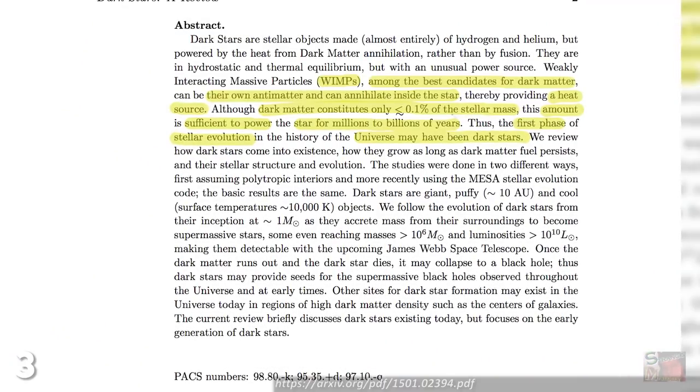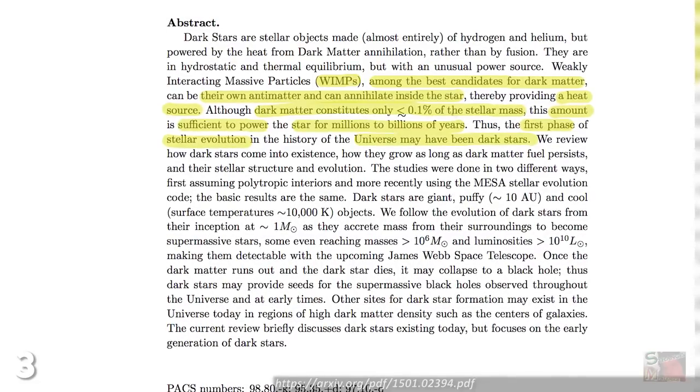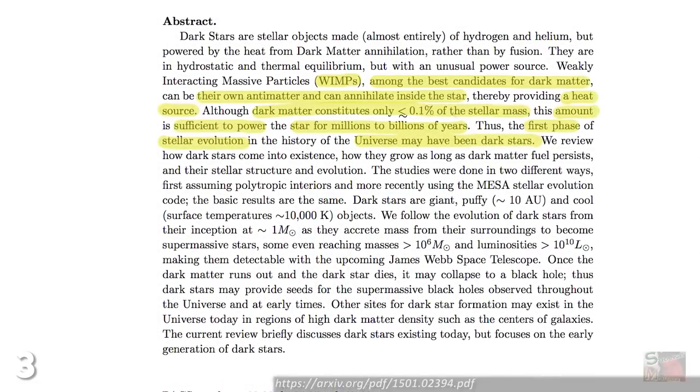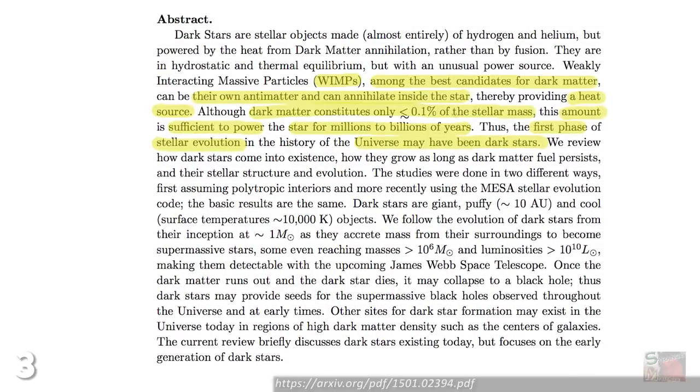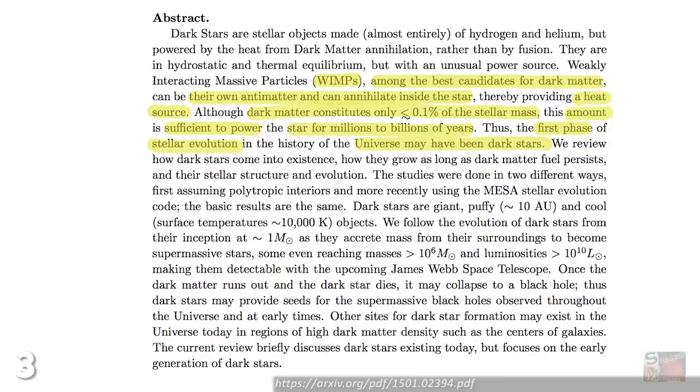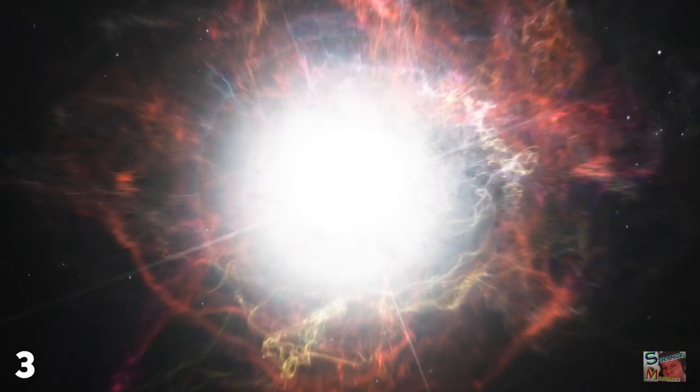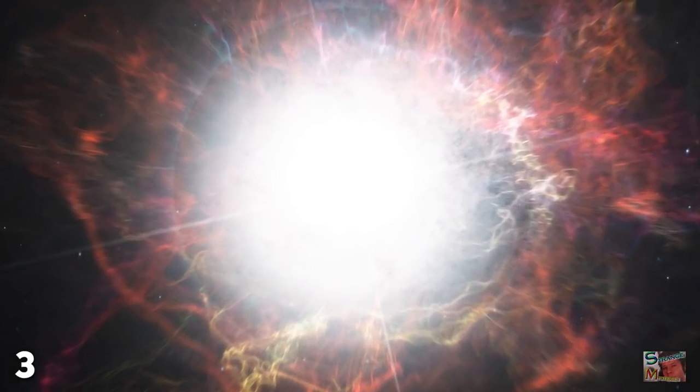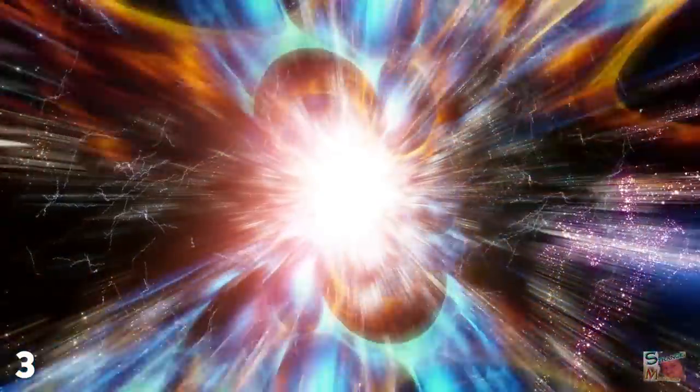Despite dark matter constituting just 0.1% of a dark star's stellar mass, this small amount is enough to power the star for millions to billions of years. The reason dark matter particles can do this, according to Freese, is because they are weakly interacting massive particles, as she said in the first place. WIMPs can exist as both matter and their own antimatter, and when such things combine, the resulting reaction is one of the most powerful events in the universe, converting into energy with 100% efficiency.